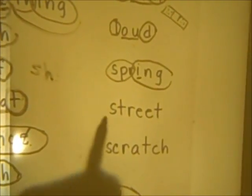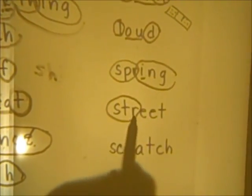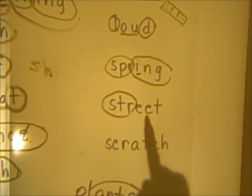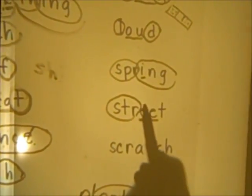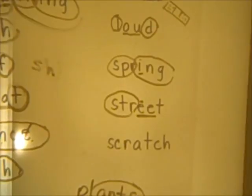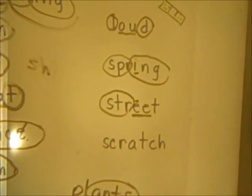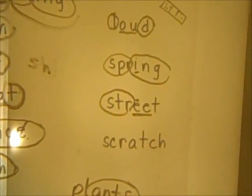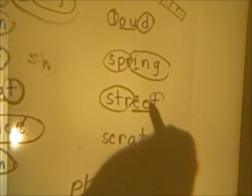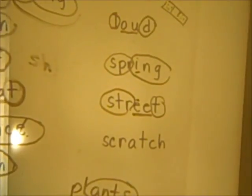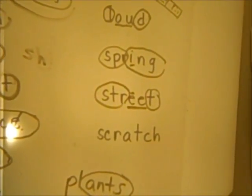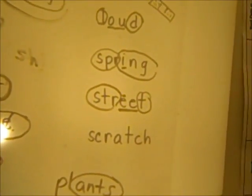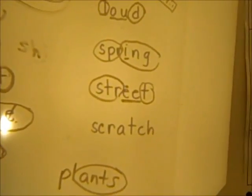Here's S-T-R-I-N-G. Underline E-E together — that's our vowel team, and it makes the E say its name. It's a long vowel team. And circle the T. S-T-R-E-E-T.